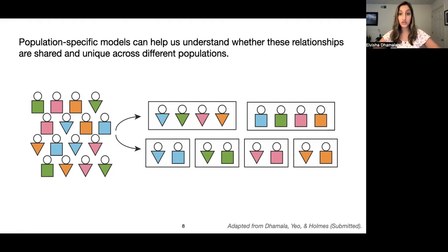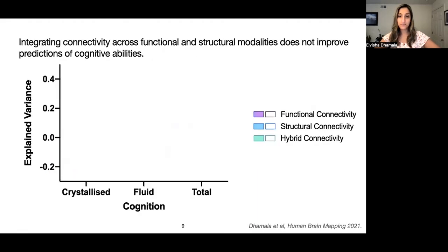I'll be presenting results from two different studies today. In the first, we looked at how functional connectivity is related to cognition and whether those relationships are shared across the sexes. In the second, we looked at how neuroanatomy is related to cognition and whether those relationships are shared or unique across the sexes and across children and adults. Before I dive into that, I'll quickly go through some background. In my earlier work, I've looked at how well functional, structural, and a hybrid connectivity combining both structure and function can predict individual cognitive abilities.